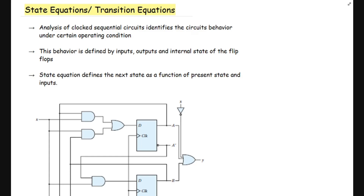Today we are starting formally with the sequential logic circuit and we will analyze how the circuit will respond when different types of inputs are applied. We need to understand how the circuit performs under different input conditions. This gives us the analysis of a clocked sequential circuit, which identifies the circuit behavior under certain operating conditions. Given different conditions of inputs and states, we analyze how the circuit responds. This behavior is actually a function of the inputs, outputs, and internal state of the flip-flops.